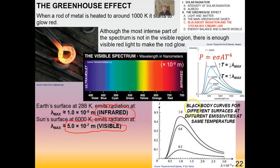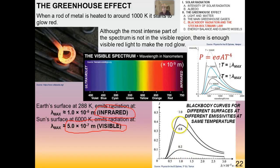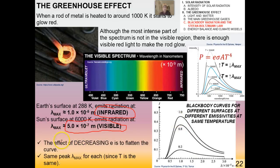This graph shows blackbody curves — intensity against wavelength — for different surfaces at different emissivities but at the same temperature. As the emissivity goes down, the actual peak of intensity goes down, which makes sense. The effect of decreasing emissivity is to flatten the curve. Each of these curves has the same lambda max, because lambda max depends on temperature only — it's inversely proportional to temperature.